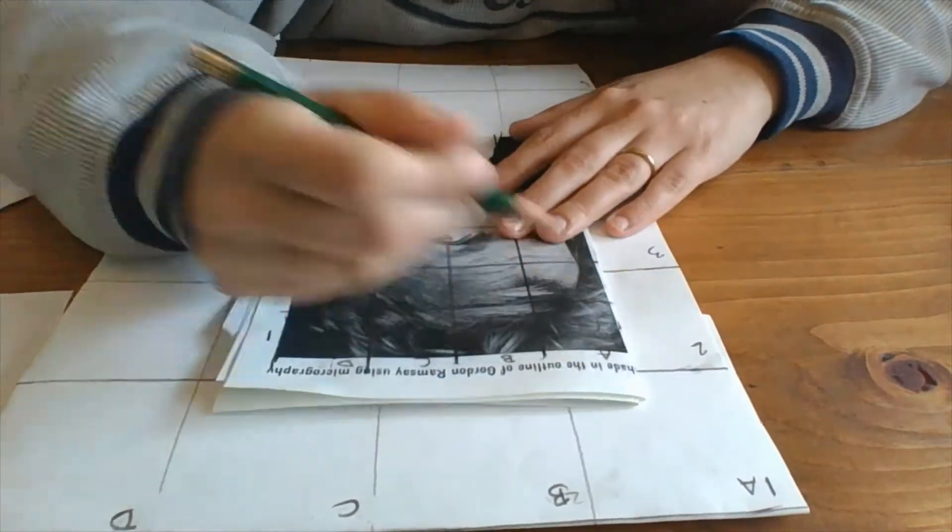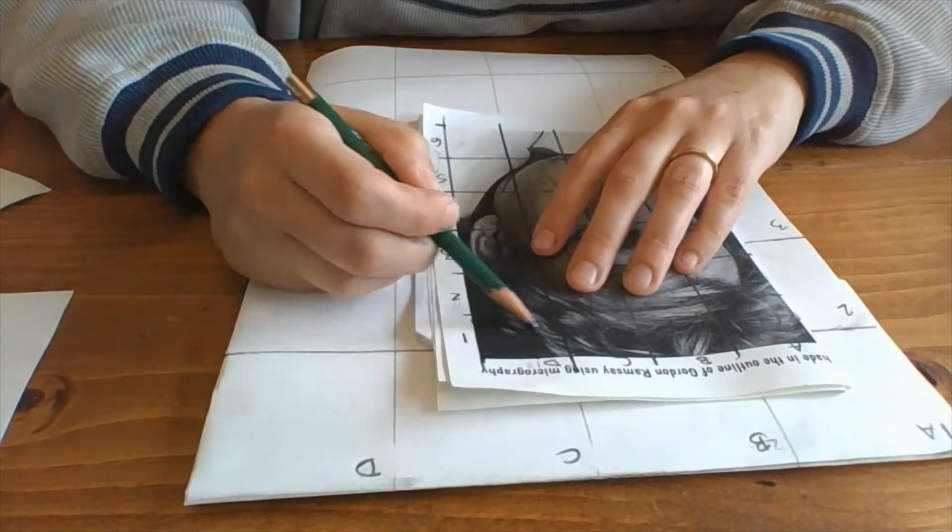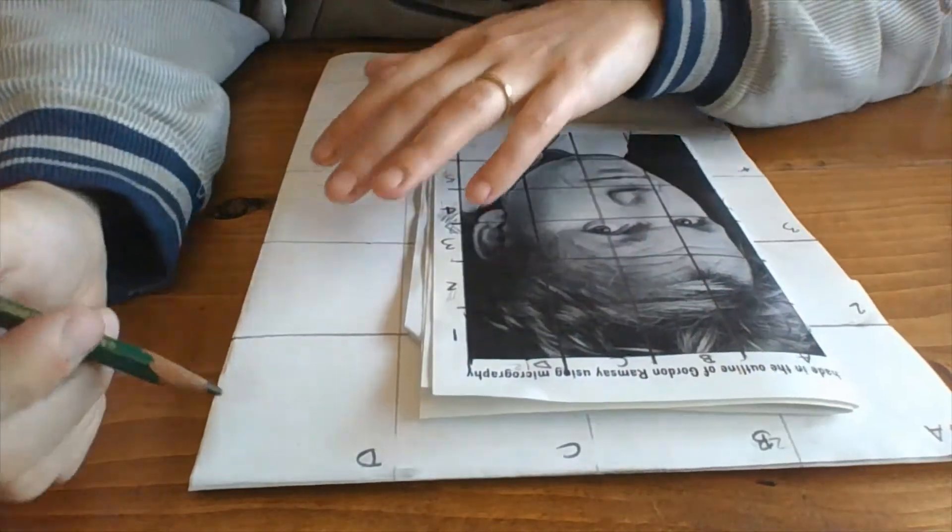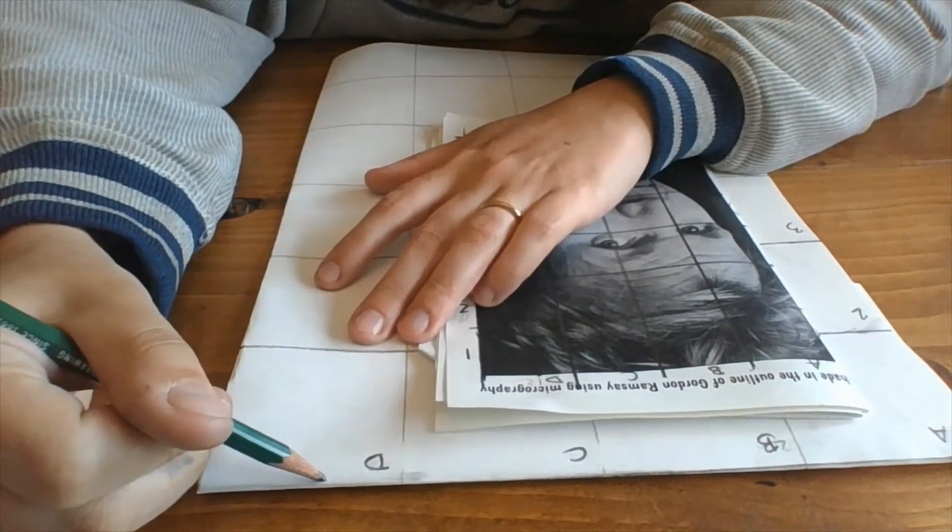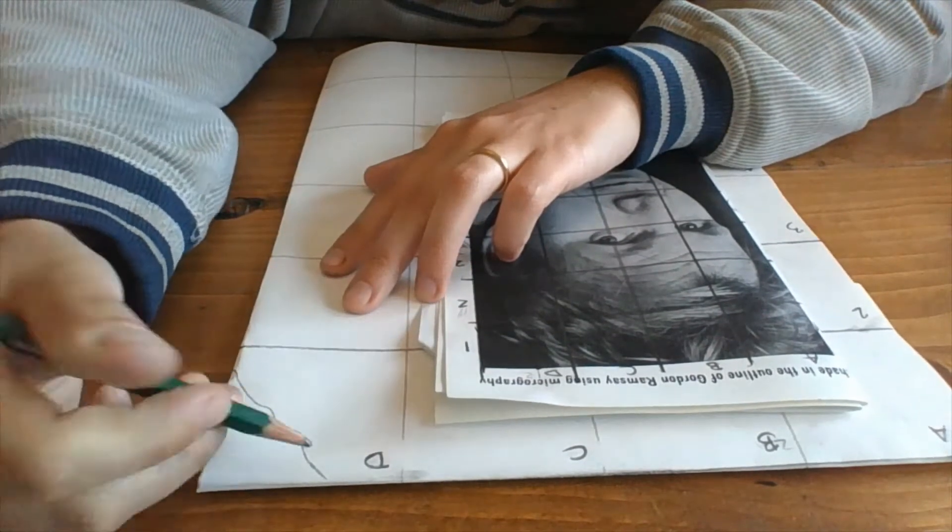So to do this, what I like to do is just look for an easy place to start. 1D, honestly, it looks pretty easy. It's just the very edge of his hair. So I'm going to go ahead and put in a shape that corresponds to how it looks in the photo.